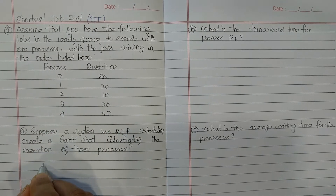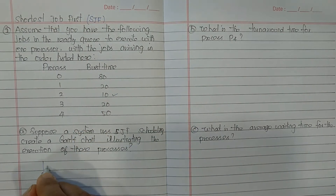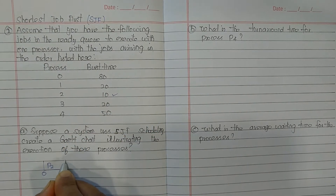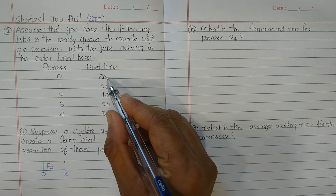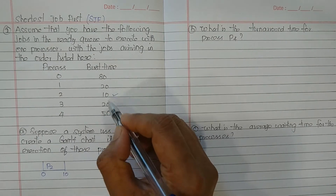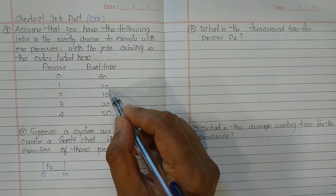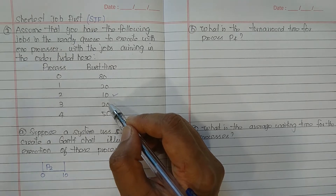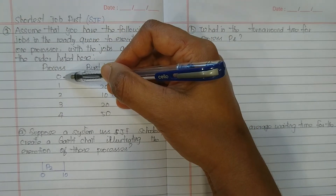Now, which process has to be started? We need to go with the smallest job. Among these five, the smallest is P2 — it needs only 10 milliseconds. So P2 starts execution and finishes at time 10. After that, we have burst times 80, 20, 20, and 50. Since P1 and P3 have the same burst time of 20, we go with whichever comes first in the listed order.